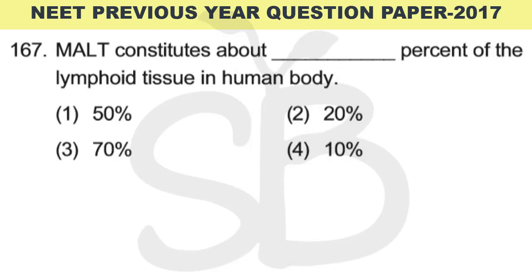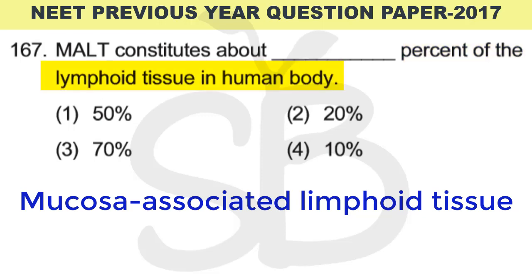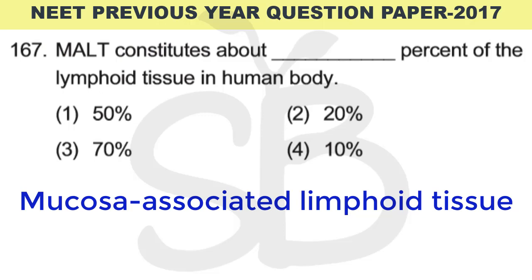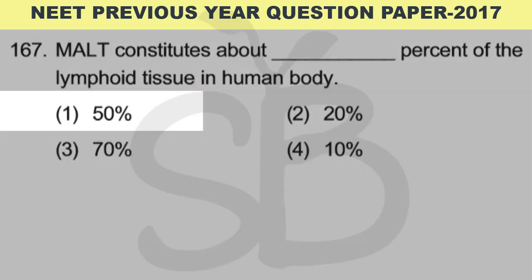Question number 167: MALT, or Mucosa Associated Lymphoid Tissue, constitutes about what percent of the lymphoid tissue in the human body? The answer is option 1: it constitutes 50% of the lymphoid tissue in the human body.